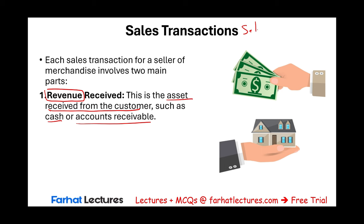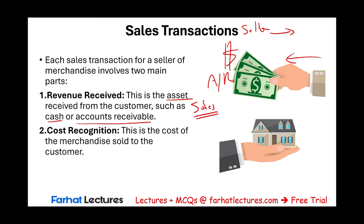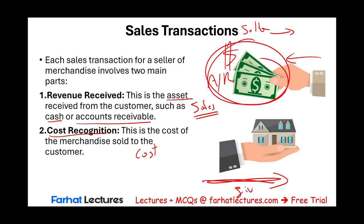When the seller makes a sale, they would expect to receive cash or a promise to receive the cash, which is accounts receivable. One part of the journal entry is the revenue or the sales part. The other part of the transaction is the cost of the sale or cost recognition. When you make a sale, you receive the money and you have to give up something in return — you have to give up the inventory. Let's assume you're selling a house: you receive the money, you give up the house. This is the cost of the merchandise sold to the customer.